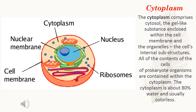Cytoplasm. The cytoplasm comprises cytosol, the gel-like substance enclosed within the cell membrane, and the organelles, the cell's internal substructures. All of the contents of the cells of prokaryote organisms are contained within the cytoplasm. The cytoplasm is about 80% water and usually colorless.